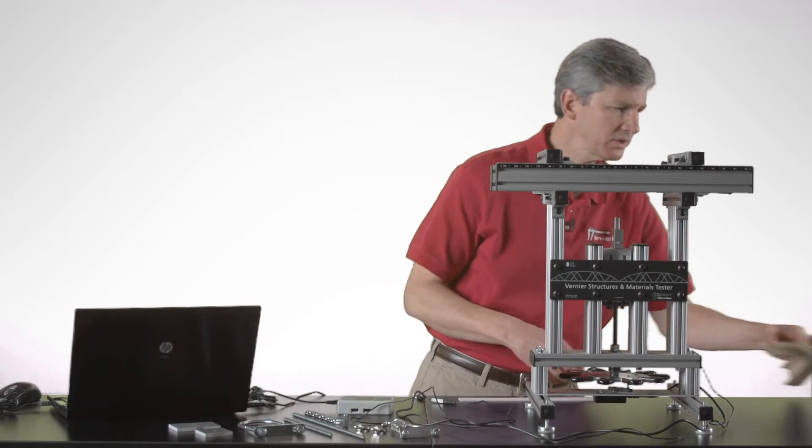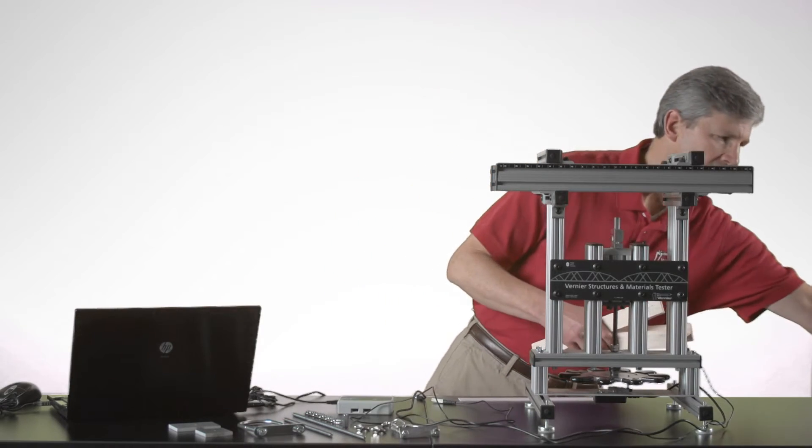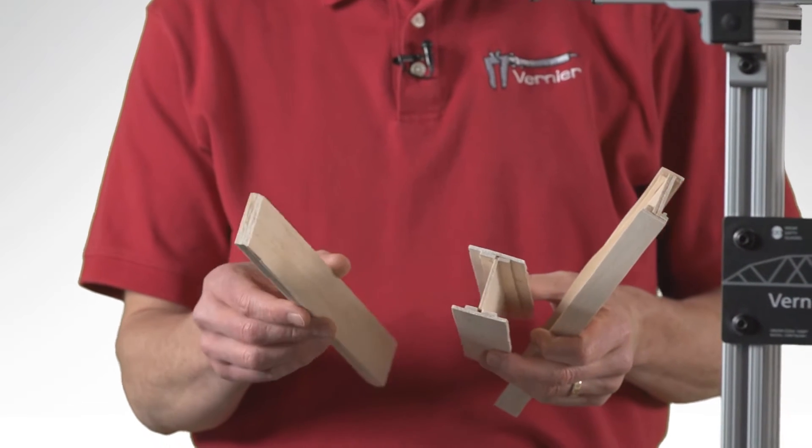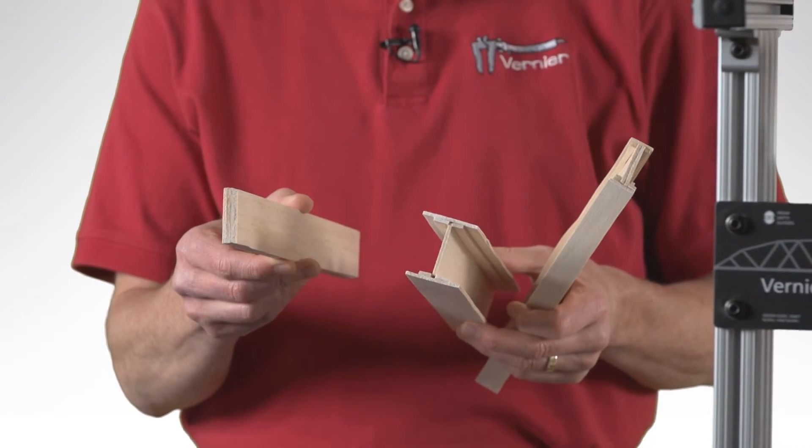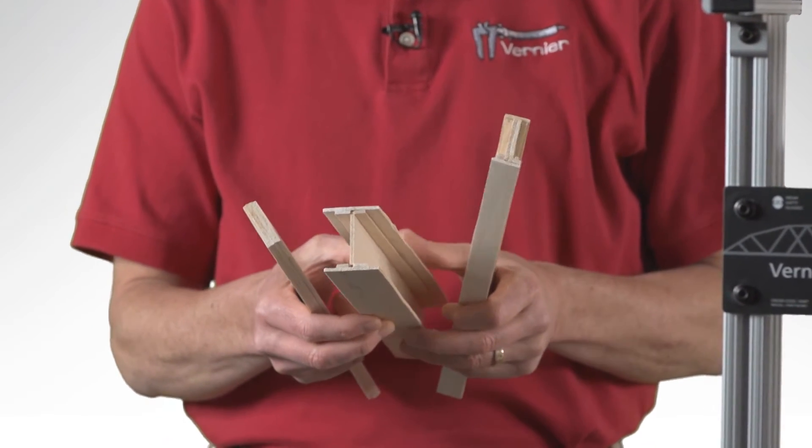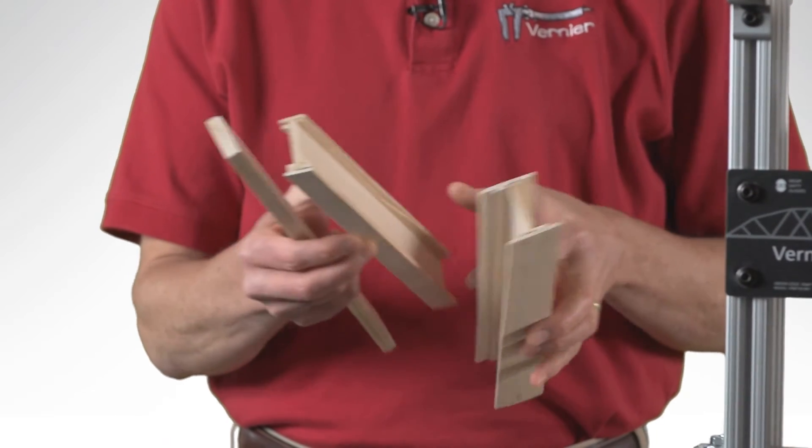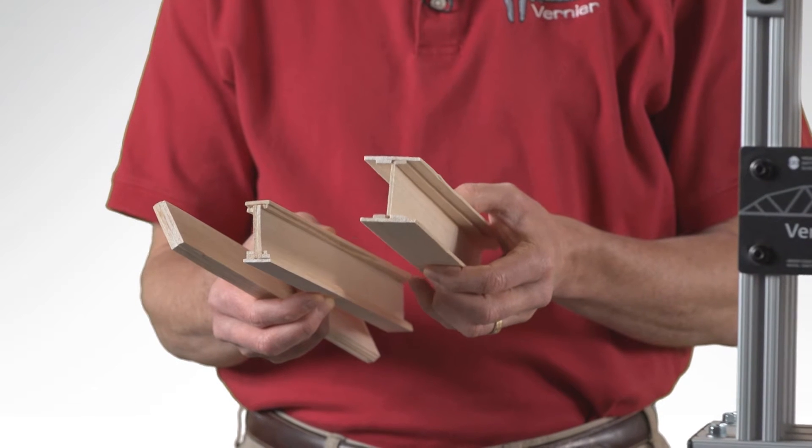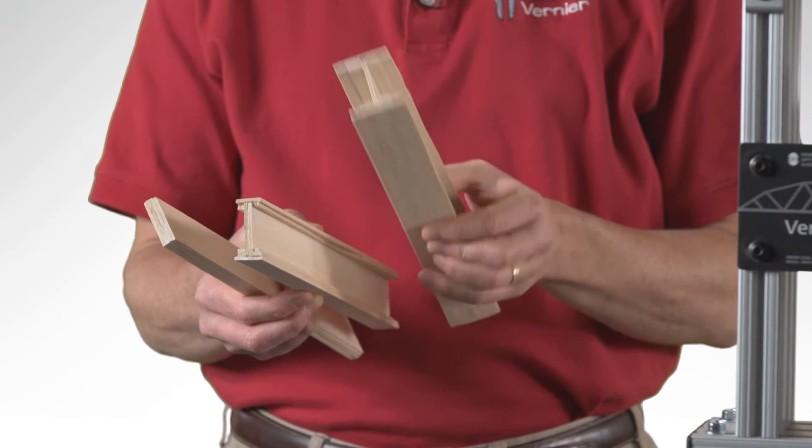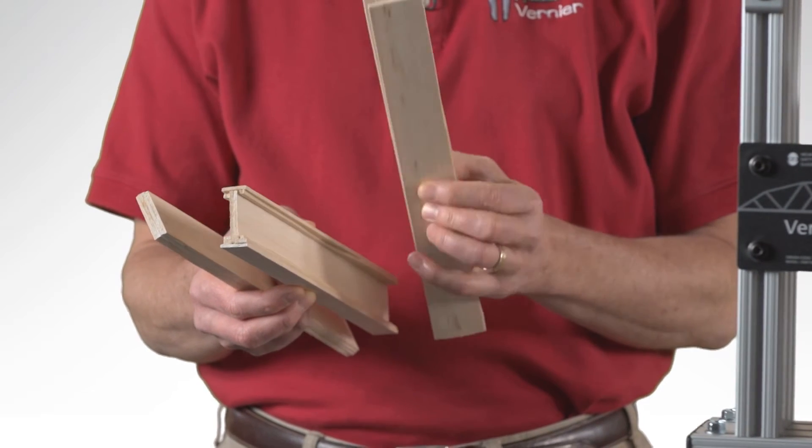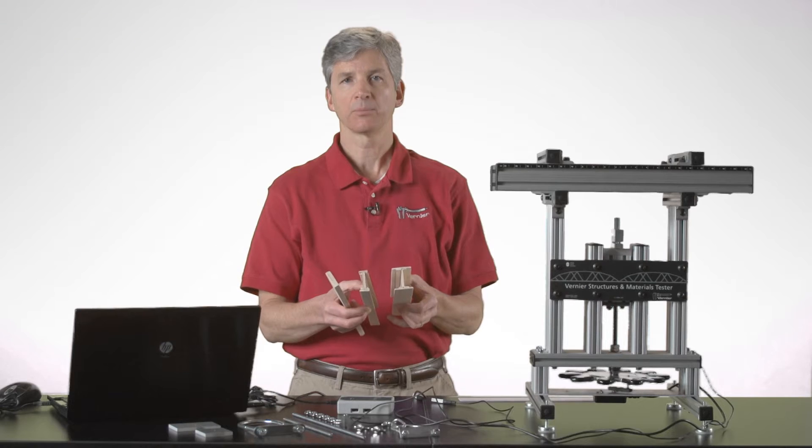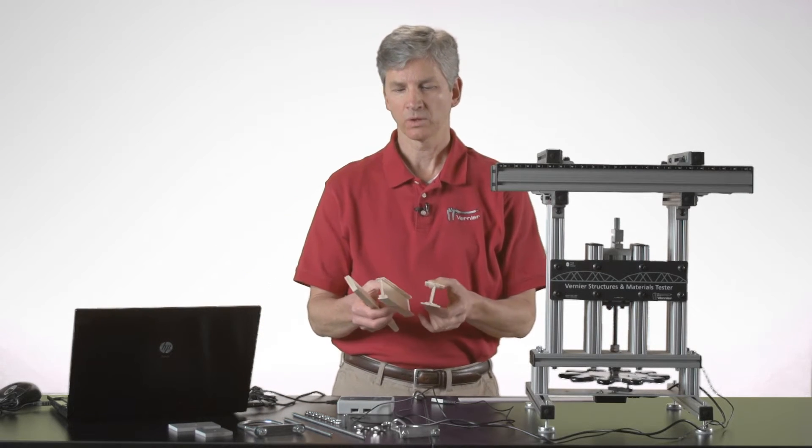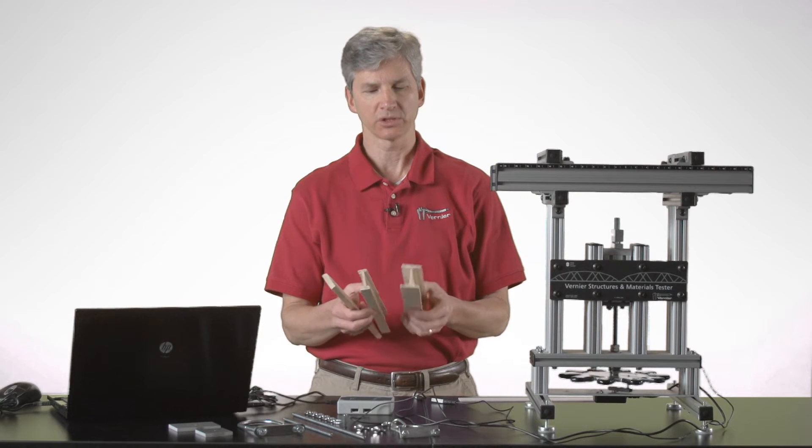I have three beams here that are constructed slightly differently. This is just a rectangular beam. That's going to have much different properties than a beam that's an I-beam. And this beam has even more of its mass distributed away from its center. And it's going to have a different configuration or different properties associated with the amount of flex that it has when a force is applied to that particular beam.